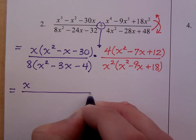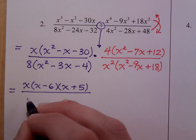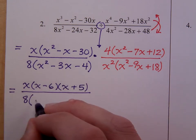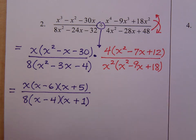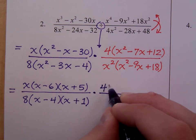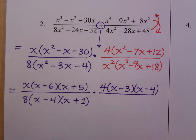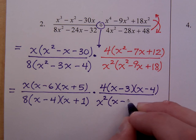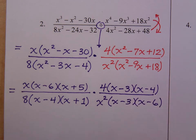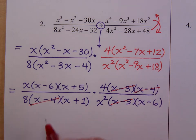Now it's just a matter of finishing the factorizations. x squared minus x minus 30 factors as x minus 6 times x plus 5. The common factor of 8 is still there, and this polynomial factors as x minus 4 times x plus 1. Your GCF of 4, and x squared minus 7x plus 12 factors as x minus 3 times x minus 4. Here's my x squared, and this guy factors as minus 3 and a minus 6.